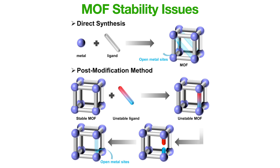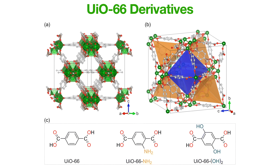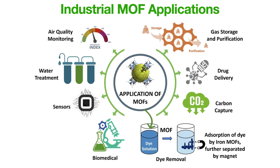One of the major challenges in early MOFs was stability — many fell apart in water or under heat. But newer generations, like zirconium-based UiO-66 frameworks, introduced strong metal-oxygen bonds that make them extremely robust. These can survive boiling water, high pressure, even acids. Once stability was solved, MOFs moved from curiosities to real-world materials, ready for industry, not just scientific journals.